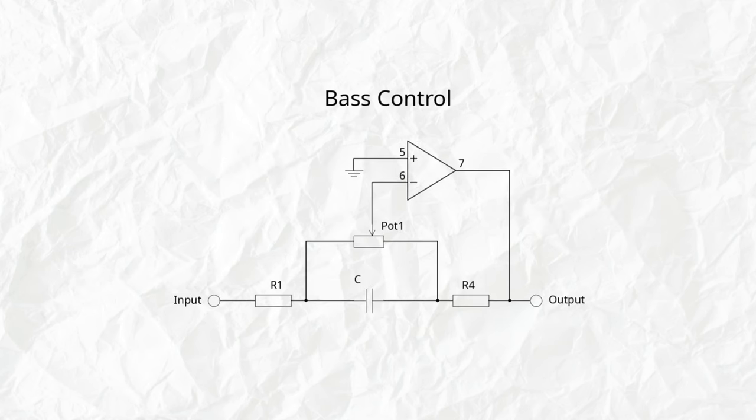For higher frequencies the capacitor will basically be a short and this means that the potentiometer really has no effect on the circuit and the gain is therefore one because the other two resistors are the same. For lower frequencies instead the capacitor does constitute an important impedance and this means that the potentiometer has an effect on the gain. Therefore the lower frequencies will either be amplified or attenuated based on the position of our potentiometer. This is therefore the bass control.